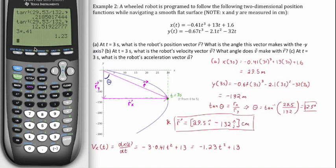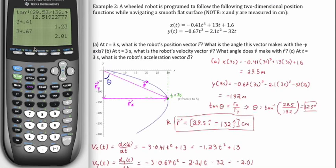Now for vy as a function of time, that's dy/dt. That gives us negative three times 0.67 t squared minus two times 2.1 t, minus 32. Cleaning that up: three times 0.67 is 2.01, so we have negative 2.01 t squared minus 4.2 t minus 32. Those are our two velocity functions in x and y respectively.